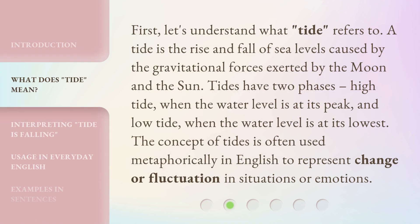First, let's understand what 'Tide' refers to. A tide is the rise and fall of sea levels caused by the gravitational forces exerted by the moon and the sun. Tides have two phases: high tide, when the water level is at its peak, and low tide, when the water level is at its lowest. The concept of tides is often used metaphorically in English to represent change or fluctuation in situations or emotions.